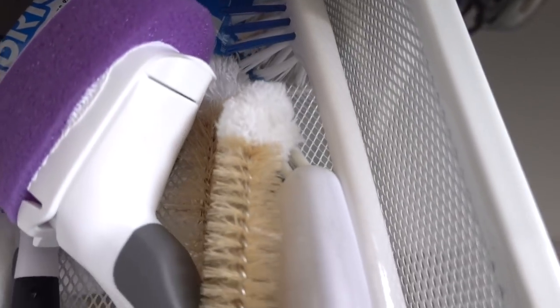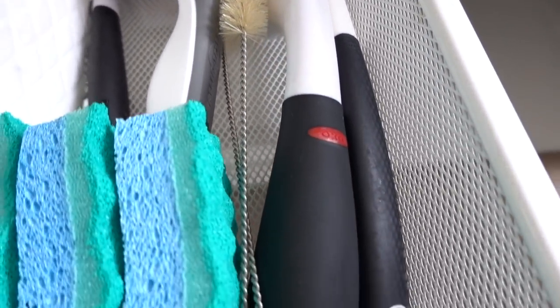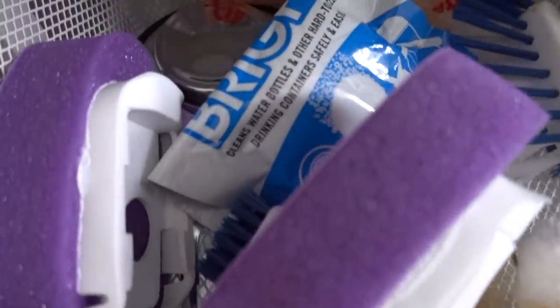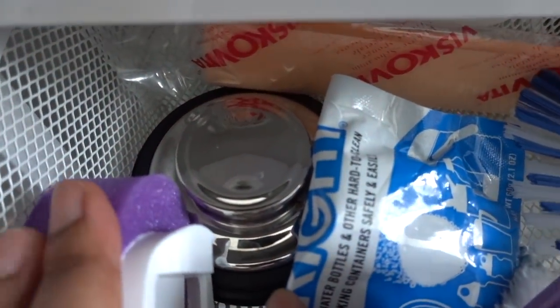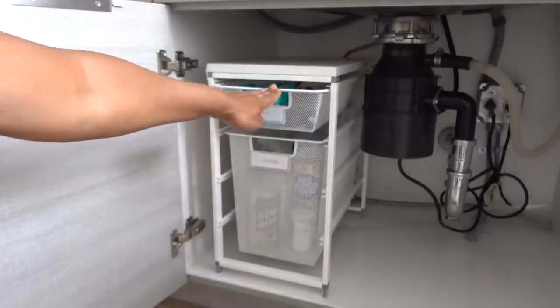The next drawer I have is just for tools. This is extra sponges, the cooktop brush, the cleaning brushes. I have a bunch of cleaning brushes from OXO for different things. A couple of magic erasers and the plug for the drain. That's very important. So those are the cleaning tools in my elevator unit.